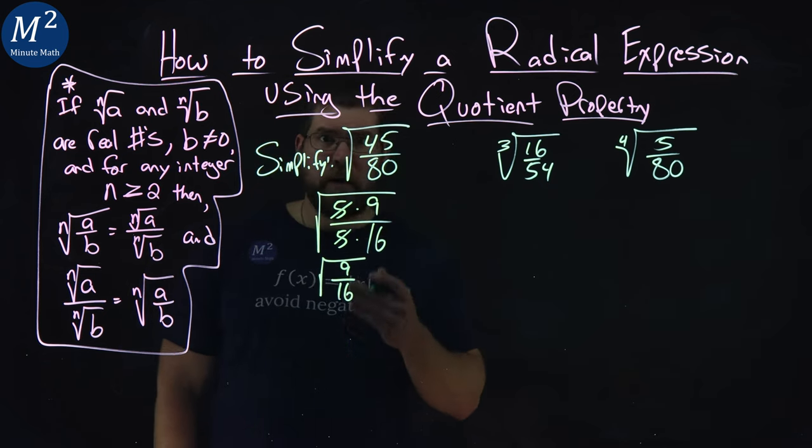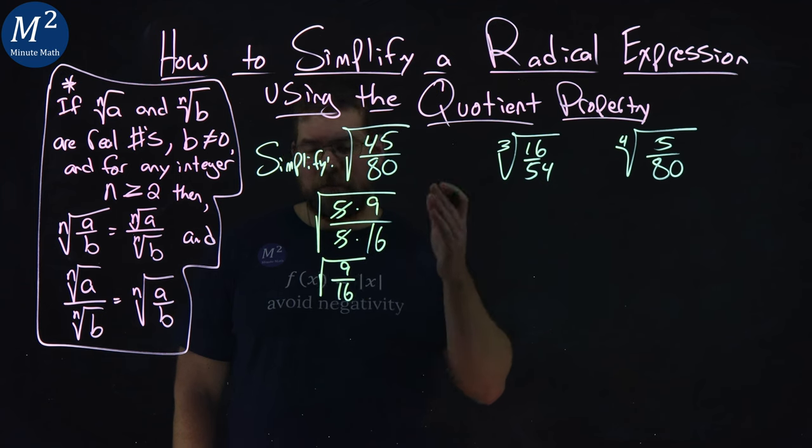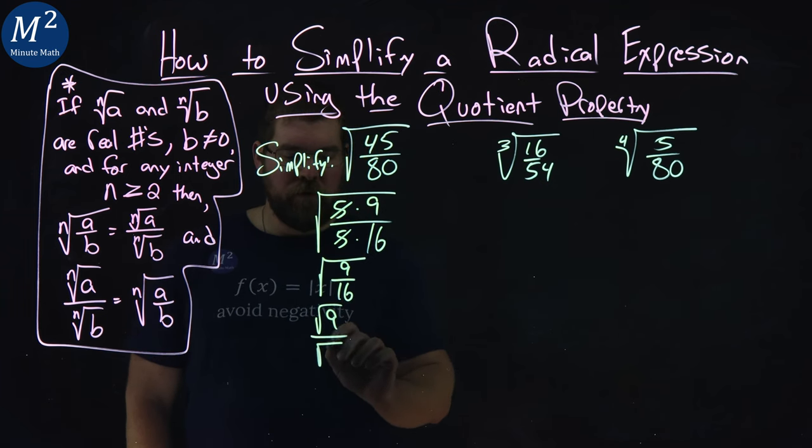5 clearly cancels here and we have the square root of 9 over 16. Now, our quotient property tells us that we can separate this into two different square roots: square root of 9 over square root of 16.